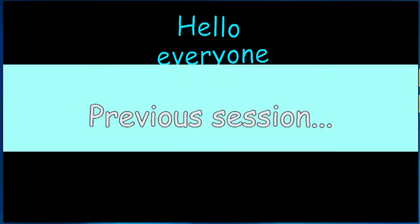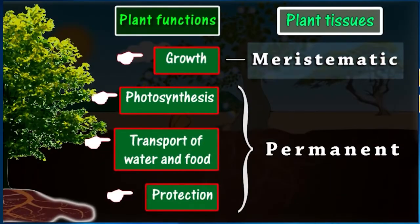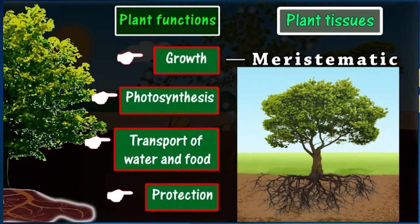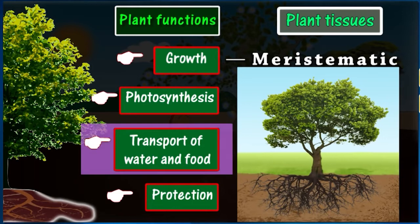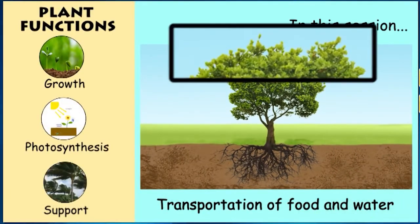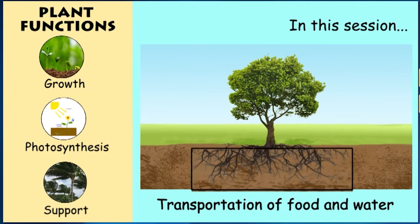Hello everyone. Previously in the chapter of plant tissues, we have discussed some specialized tissues needed by the plant to carry out functions like growth and photosynthesis. Now, along with these functions, a very important function of the plant is the circulation or transport of food and water to all the parts of the plant, which includes even the highest or lowest part of that plant.